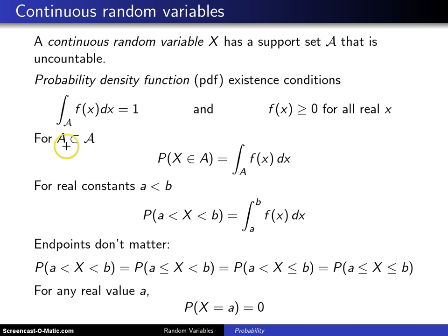Now if you have a set A, which is a subset of the support, and you'd like to calculate the probability X is an element of A, you simply integrate over that set A of f of X dx. Again in the discrete case we would sum rather than integrate.